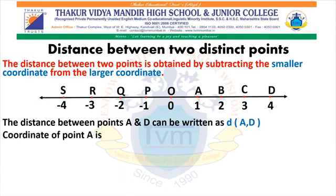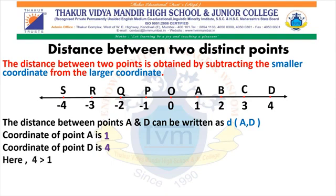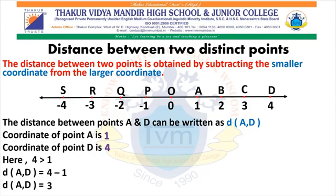Now we will see how to find the distance between point A and D. The coordinate of point D is 4. Which coordinate is greater? 4 is greater than 1. Therefore, distance between point A and D: the formula is greater coordinate minus smaller coordinate. So, the greater coordinate is 4 and the smaller coordinate is 1. So, 4 minus 1. Therefore, distance A, D equals 3.